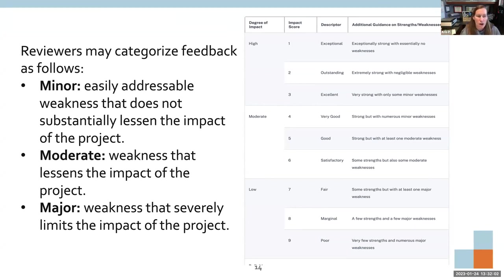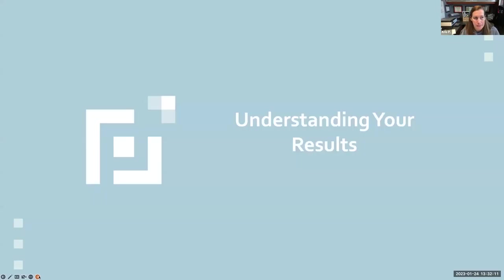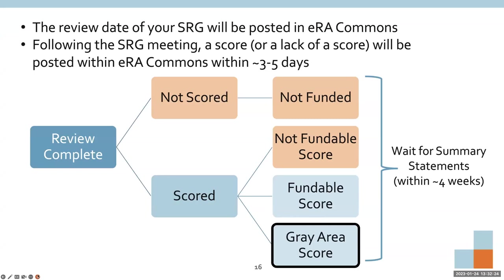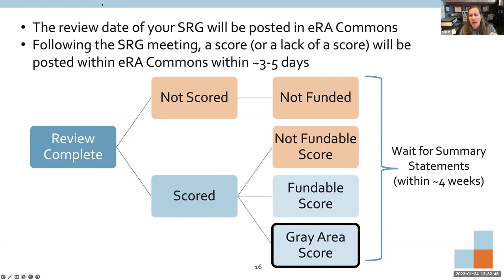Reviewers are provided with information on how to categorize their scoring using the nine-point scale. They can categorize feedback as minor, moderate, or major weakness, which you'll see in summary statements. This helps you know where to focus your attention if you're going to resubmit. Once your application has been reviewed, you can watch it move through the process in eRA Commons. Once assigned to a study section, that will show up, as will the institute and center assignment and a preliminary review date.